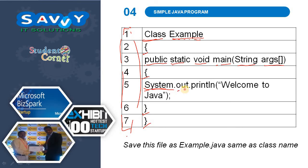System is a class, out is an object, and println is the method used to display the message. The highlighted items are keywords, while others have special meanings. The keyword class means that what we are writing next is a class definition, and 'example' is an identifier indicating the name of the class. public means the main method will be called publicly.